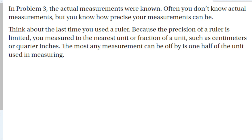In the last problem the actual measurements were known, but if you don't know the actual measurements yet know how precise your measuring tool is, you can still figure out the error. Think about using a ruler — because its precision is limited, you measure to the nearest unit or fraction of a unit. The most any measurement can be off is by one half of the unit used in measuring; you could have rounded up or down, but no further than that.